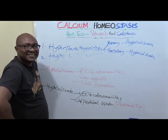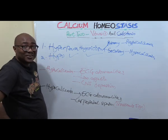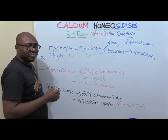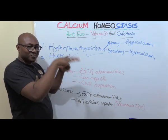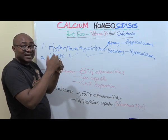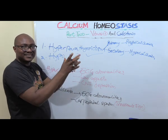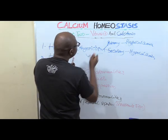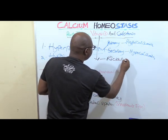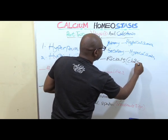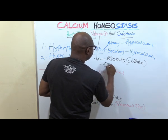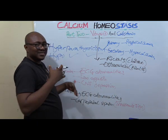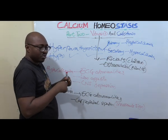Vitamin D deficiency is easy — you already know it. In children, it causes rickets, because there is not enough mineralization of the bones. Calcium cannot go in to mineralize the bone, so there is muscle weakness and skeletal abnormalities, which manifest as bowed legs. In adults, vitamin D deficiency is called osteomalacia — adults don't get bowed legs, but there is bone and muscle weakness.